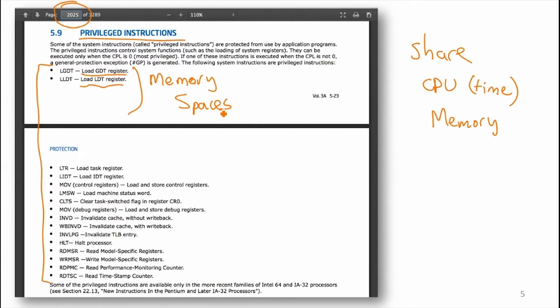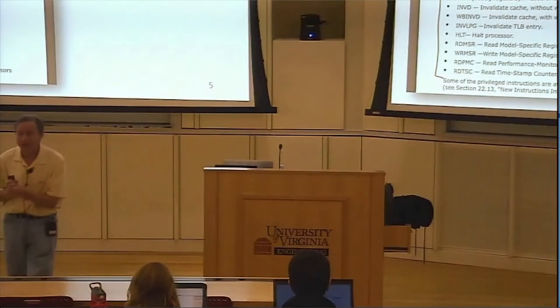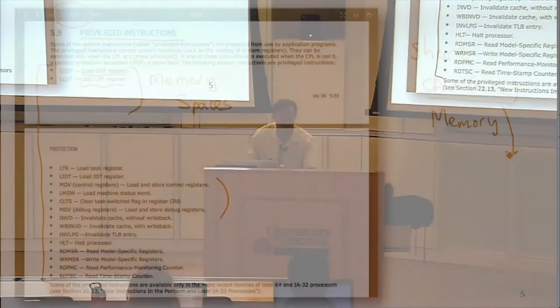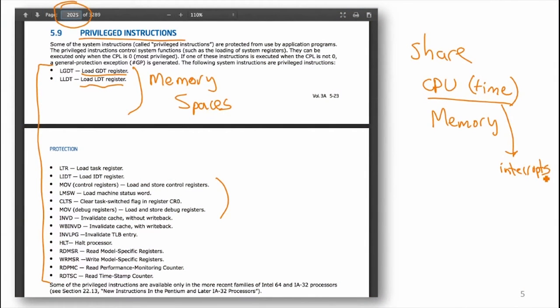There are also instructions about control registers. These are not about setting up memory spaces — they relate to the other key privileged thing: in order to share time well, only the kernel should be able to handle interrupts. There must be a table stored in memory of where to go when there's an interrupt, and only the kernel can write to that table. So both interrupt handling and memory control are the critical things that need to be privileged.